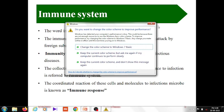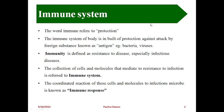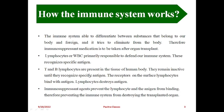The immune system means the collection of cells and molecules that mediate resistance to infection. The immune response is the coordinated reaction of these cells and molecules to infection and microbes. These are the definitions of immunity, antigen, immune system, and immune response. Next, we come to how the immune system works.